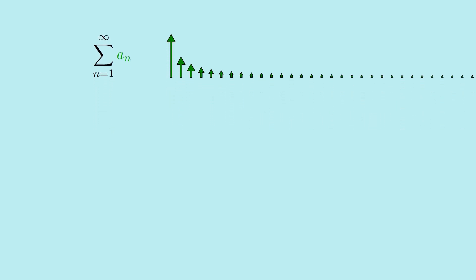So in the jump from a countable to an uncountable number of terms, it seems reasonable that we would similarly need to avoid having too many big terms. They would have to shrink quickly and probably much faster than they do for countably infinite sums, since uncountable infinity is so much bigger than countable infinity. But how much faster do they need to shrink?